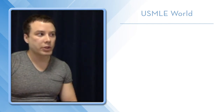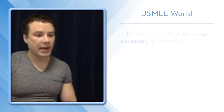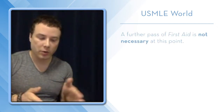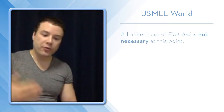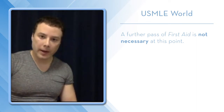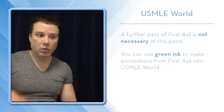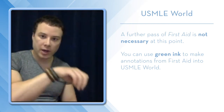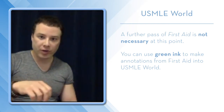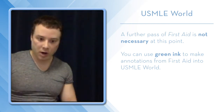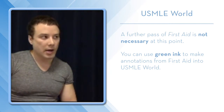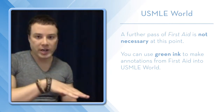And now you'll go into UWorld. I would not necessarily recommend a further pass of FA at this point — just go straight into UWorld. Now you've prepped for UWorld. You can do your annotations into FA in green ink. So everything orange and red was Kaplan, everything blue and black was RX or from wherever else, but everything in green ink now is UWorld.